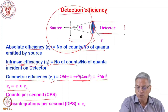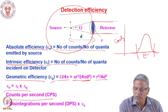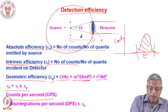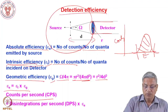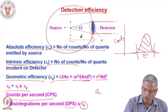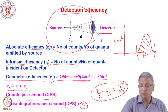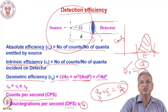Absolute efficiency equals the number of counts in the detector system divided by the number of quanta emitted by the source. For example, if a source emits 100 photons per second and your detector counts some fraction of those, that fraction is the absolute efficiency. In practice, absolute efficiency is used with a standard source. The geometric efficiency depends on the geometry of the detector system; the intrinsic efficiency depends on the detector material and the energy of the radiation. If you know the count rate and the efficiency, you can find the disintegration rate: A₀ = counts per second divided by efficiency.